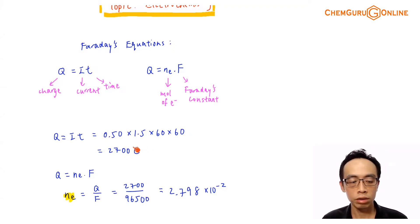The next thing is we find the number of moles of electrons involved. Moles of electrons will be charge over Faraday's constant, 2700 over 96500. The quantity of Faraday's constant is inside the data booklet. So the moles of electrons involved is 2.798 × 10⁻², which is a very small quantity.